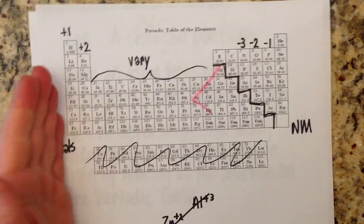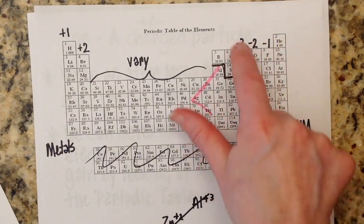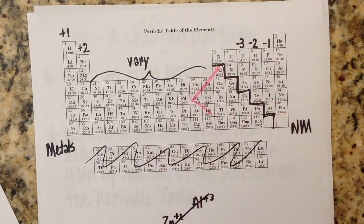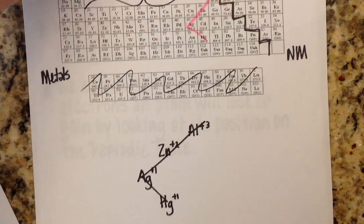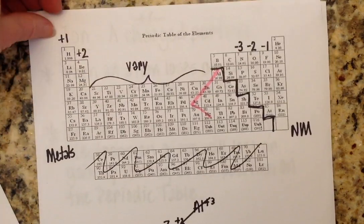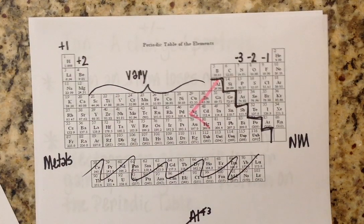So really that's all you've got to know at this point. Plus one, plus two, minus one, minus two, minus three, down to the stairs. And then remember your exceptions: three, two, one, one. So that is how you're going to know your charges when an atom becomes a cation or an anion.